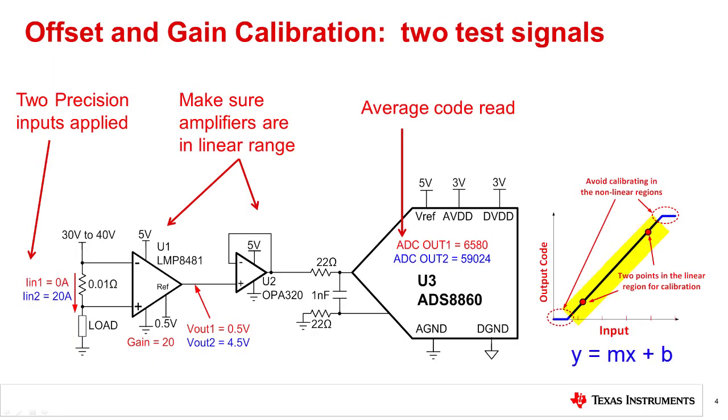The transfer characteristic for most signal chains is a linear function in the form y equals mx plus b. Technically, there will be some nonlinear terms, but assume linearity is a good first order approximation. Offset and gain calibration are based on the idea that we can solve the straight line equation for the slope and intercept. Note that the slope error is the gain error, and the intercept is the offset error. Applying two different input signals and measuring the associated output code will allow you to solve for the slope and intercept.